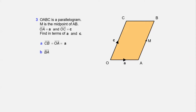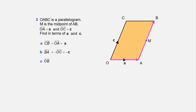Find vector BA. Vector BA is equal to CO. Since we are going in the opposite direction, CO = −OC. So BA = −OC = −c. Vector OB = OA + AB = a + AB. AB is in the same direction as OC, so it is c. Therefore OB = a + c. Vector CA = CO + OA = −c + a, so vector CA = a − c.